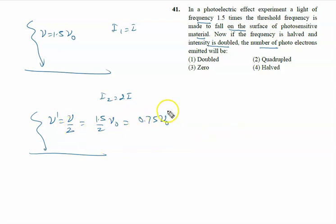In the second situation, this 0.75 nu0 is less than nu0. It means photoelectric emission is not possible. It means current will be 0. The right answer of this problem is option 3, that is 0.